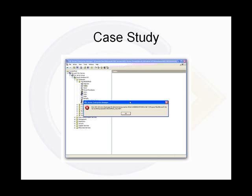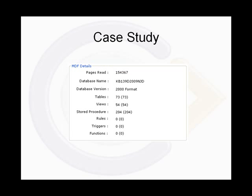The next step would have been to use some conventional SQL recovery software. This software attempted to repair the tables and export them back to a new SQL database. However, on checking the table with the customer, they reported that there was a large amount of content missing from within the table. This indicates that though the table structure is good, most of the actual content inside the table is missing — a result of file fragmentation.